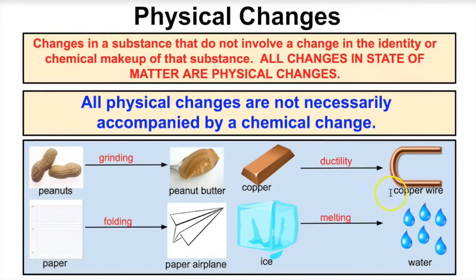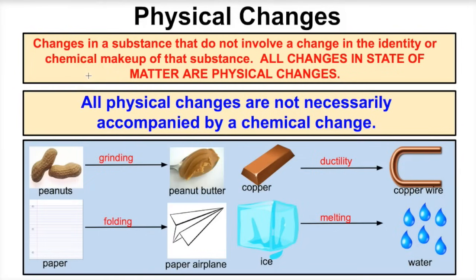So what are physical changes? Physical changes are changes in a substance that do not involve a change in the identity or chemical makeup of that substance. For example, if we take some peanuts and grind them down to make peanut butter, we still have peanuts — it's just taking on a different physical form. So grinding peanuts into peanut butter is an example of a physical change.